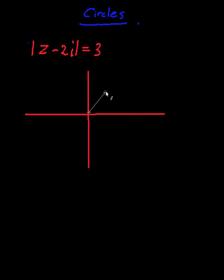My arbitrary vector z is going to look something like this, and 2i is there. So basically, z minus 2i is that vector right there.